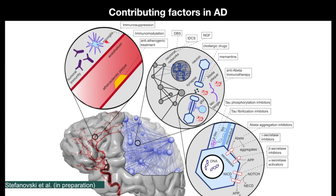Also involved is the activation of microglia, triggered when tau protein aggregates. The vascular system also plays a role: atherosclerosis causes damage to the endothelial lining, leading to impairment of the blood-brain barrier. This allows infectious causes and immunological processes that would otherwise be excluded from the brain to affect it.